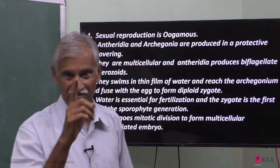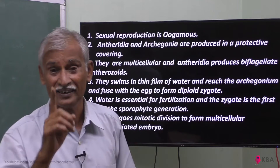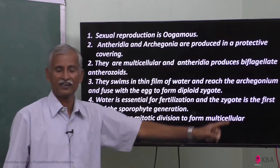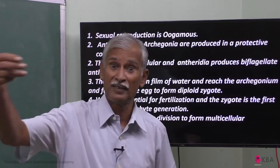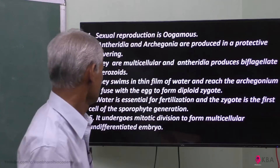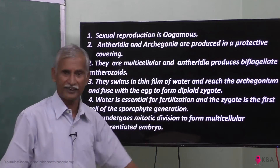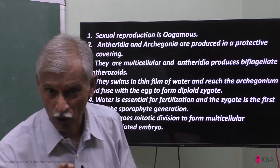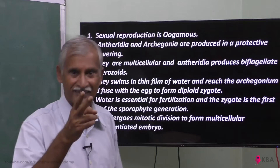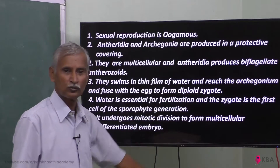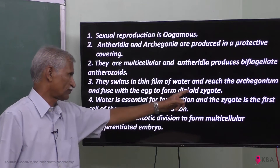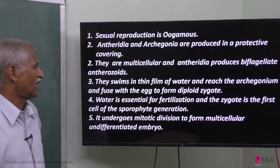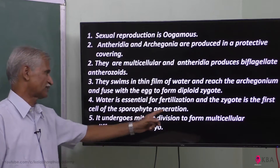Bryophytes are called the amphibians of the plant kingdom. The antherozoids swim in a thin film of water and reach the archegonium — the female sex organ — and fuse with the egg to form a diploid zygote. Water is essential for fertilization, and the zygote is the first cell of the sporophytic generation.